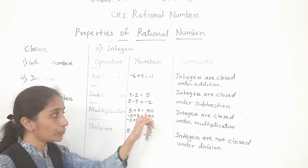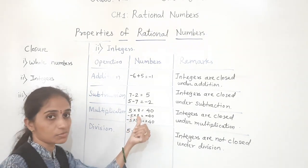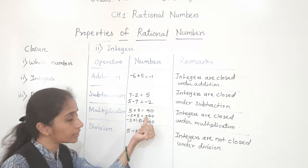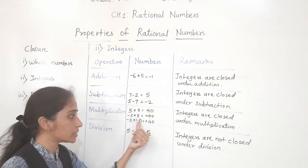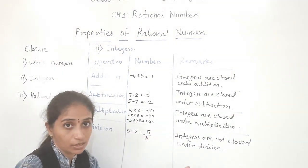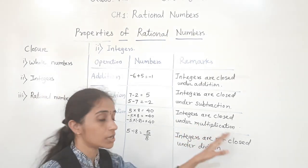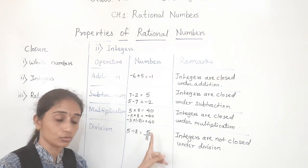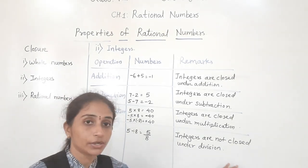For multiplication: 5 times 8 equals 40. Minus 5 times 8 — five is negative and 8 is positive — we multiply as whole numbers and attach a minus sign, giving minus 40, which is also an integer. Minus 5 times minus 8: two negatives multiply to give positive 40 — also an integer. So integers are closed under multiplication. But 5 divided by 8 equals 5 upon 8, which is not an integer. So integers are not closed under division.